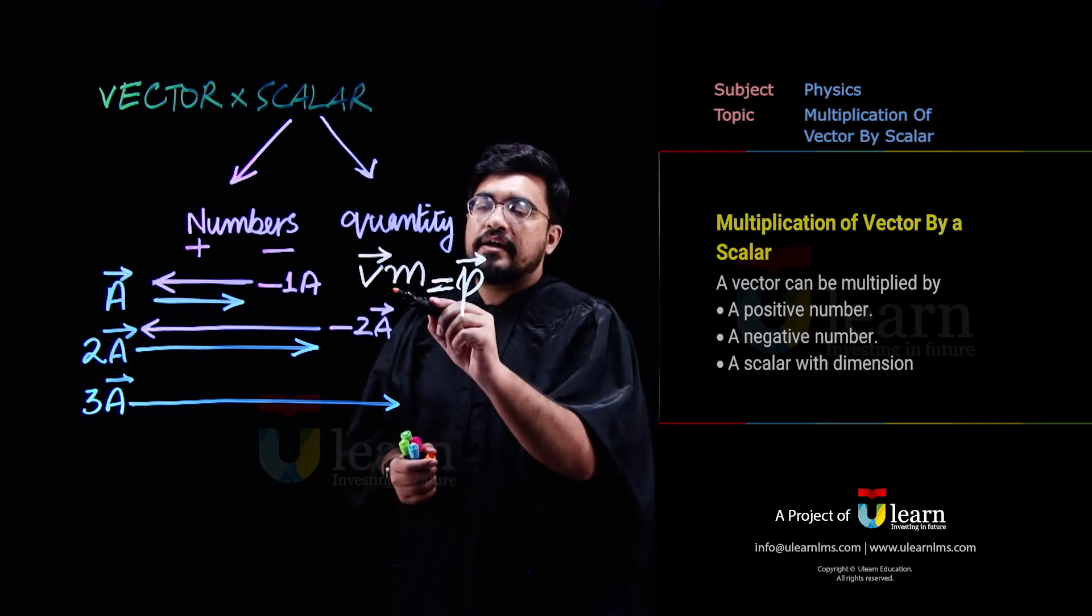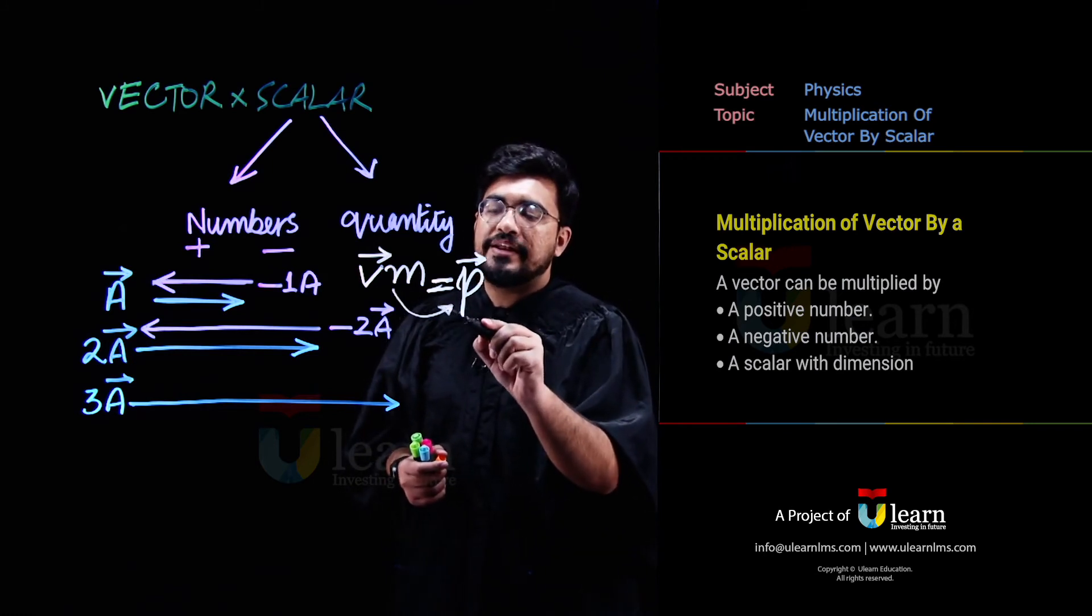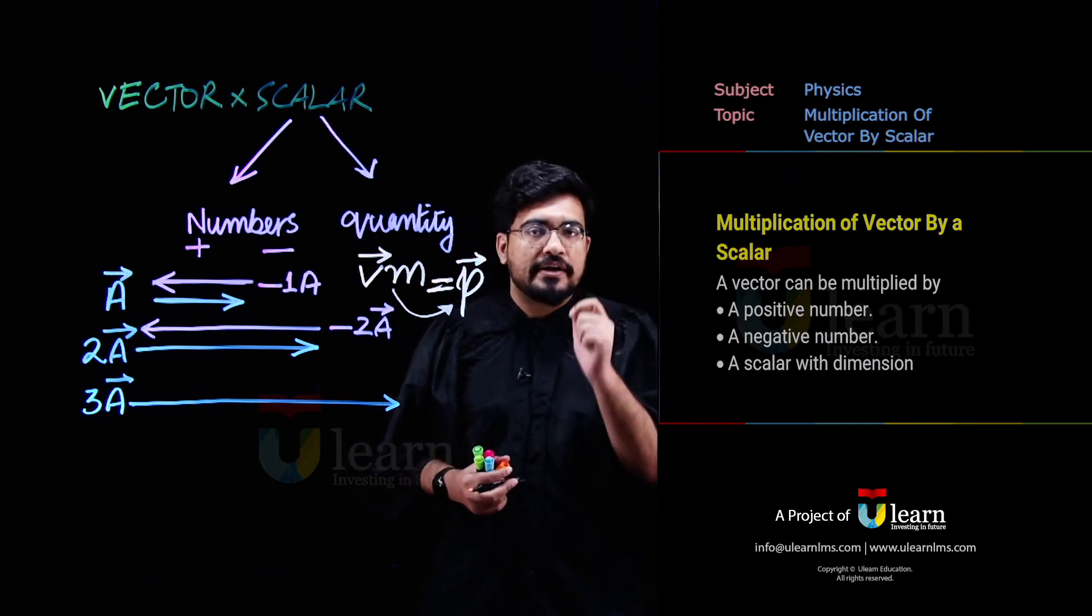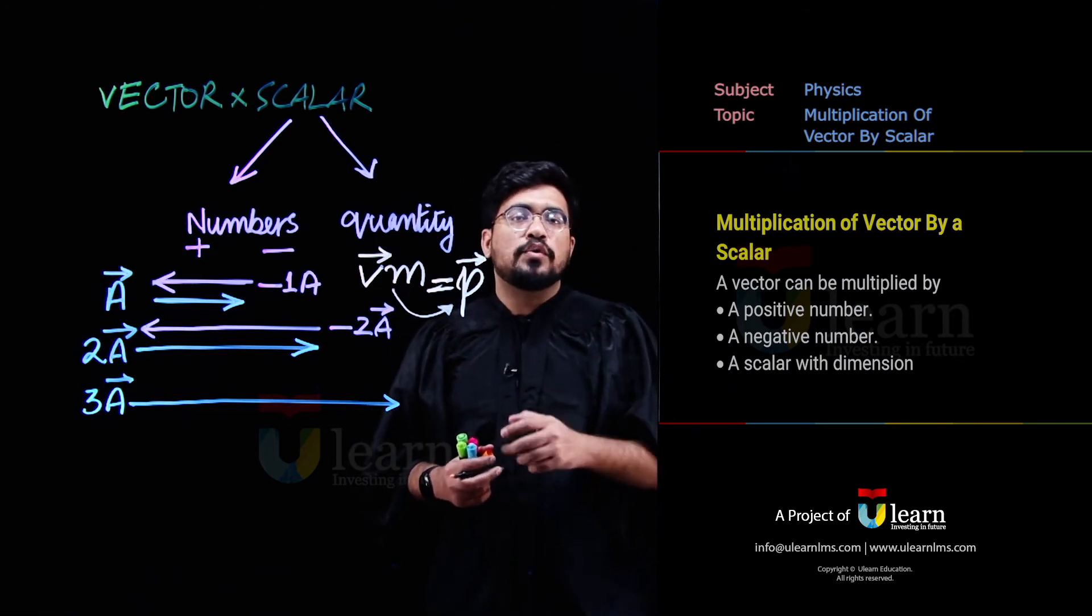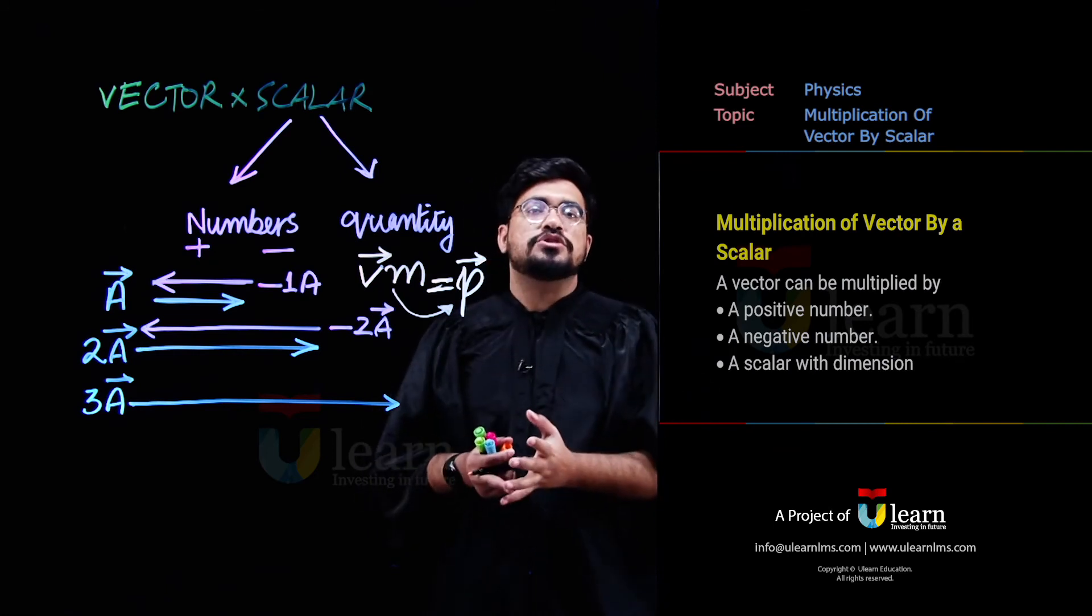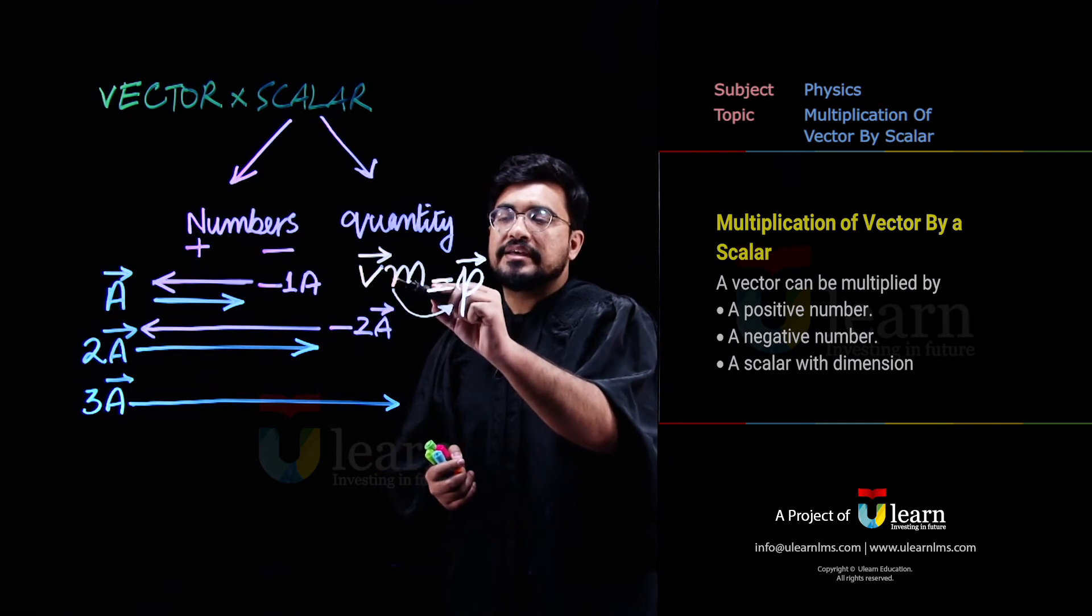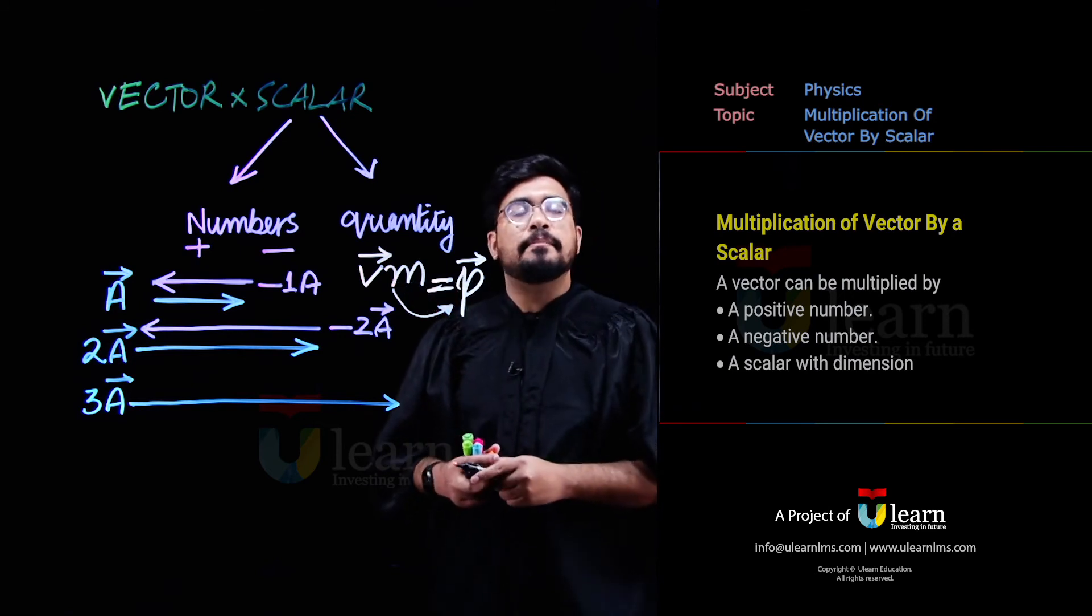Pehla point, ki answer is always a vector, lekin it will no more be the same vector. Jab aap ek vector ko ek scalar quantity se multiply kareo ge, toh vector ki nature hi change ho jayegi, jis tarah yaha pe ye velocity vector tha, mass, scalar se multiply hone ke baad, woh momentum ban gaya.